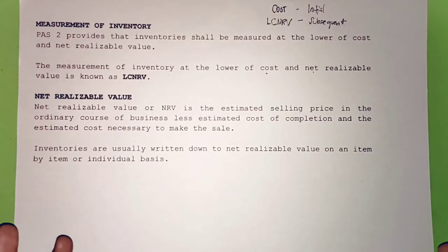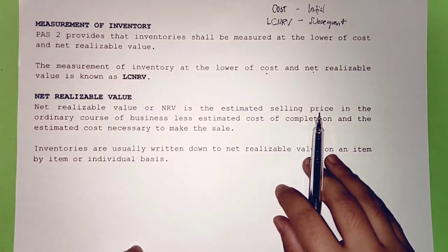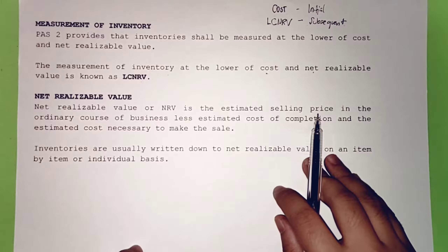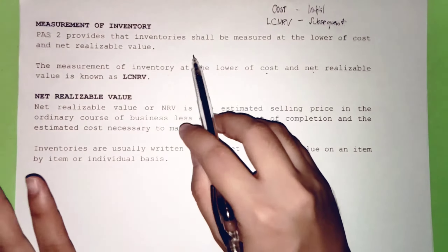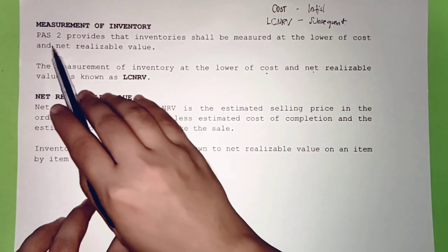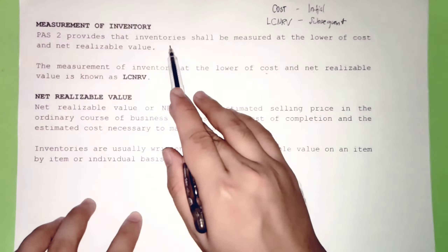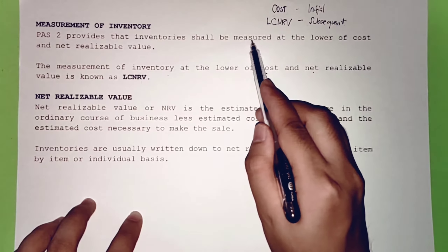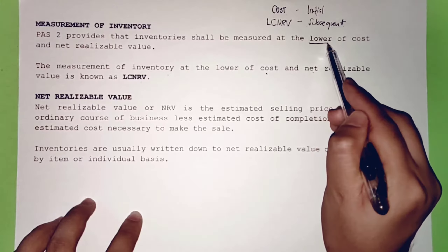Under the principle of conservatism, assets should not be overstated. That is why PAS 2 states that inventories shall be measured at the lower value — we take the lower of cost and net realizable value, since inventory is an asset account.